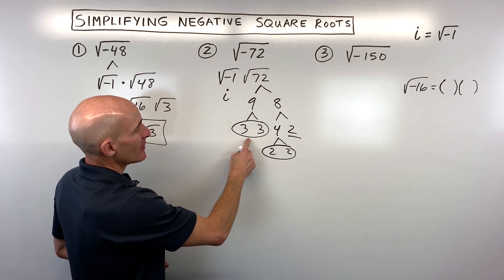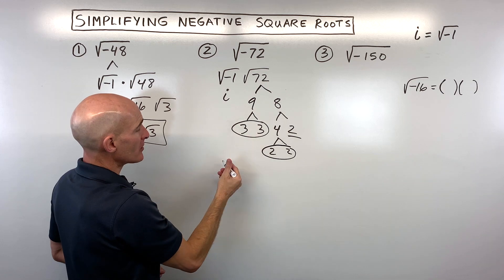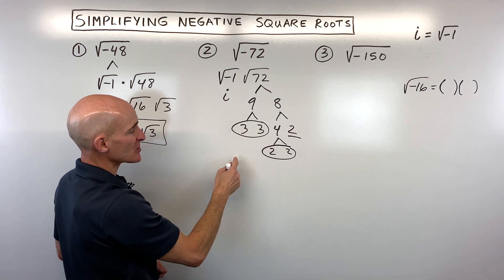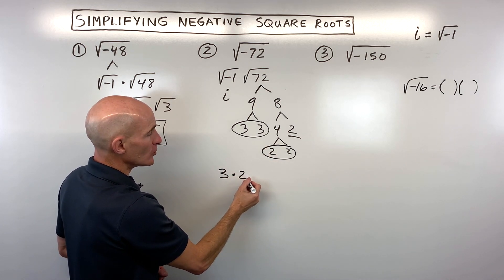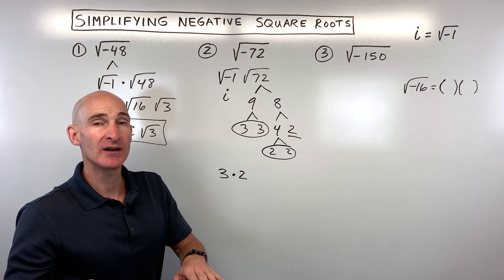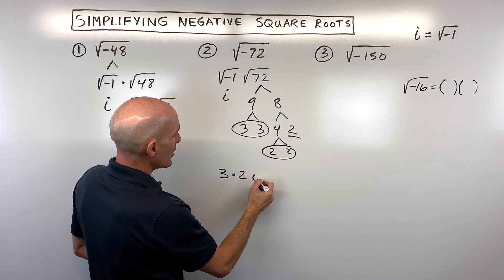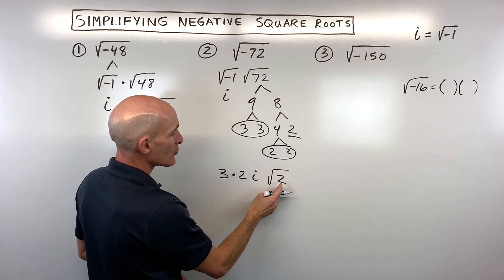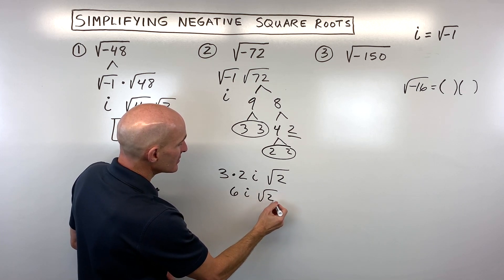The reason you pull one out is that a pair like 3 times 3 is 3 squared. The square root of 3 squared is just 3. Or think of it as: the square root of 9 is 3. Similarly, the pair of 2s is 4, and the square root of 4 is 2. The square and the square root cancel each other out, leaving us with 2. We also have the i in front. Then we have this leftover 2 that stays underneath the square root — that's like the remainder. Multiplying these together, we get 6i square root of 2, and that's your final simplified form.